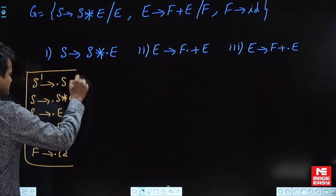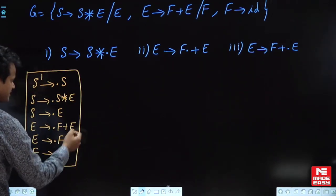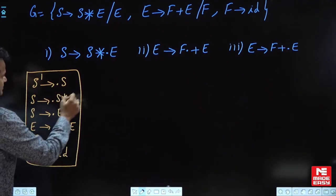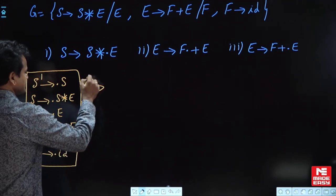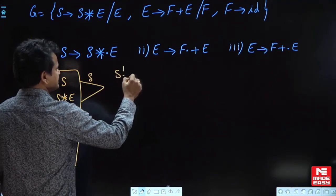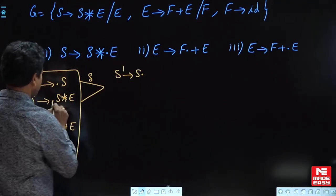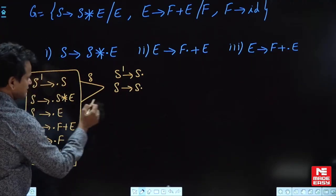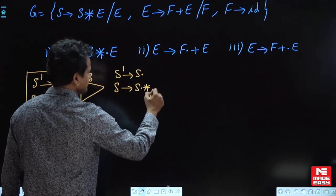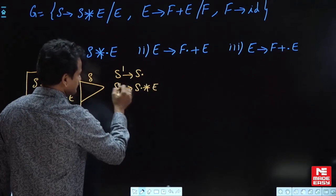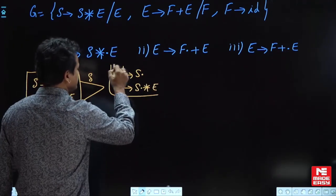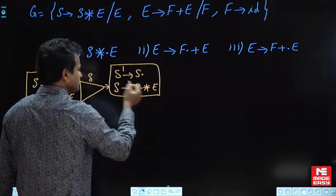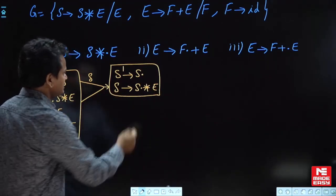Now we must write the go-to operation for every shift symbol. Here, both these productions have the same shift symbol, so these two will move to the same state: S'→S·. And for the go-to on S, we move the dot — S→·*E — and dot of terminal, so we cannot add any other production in this state. This is already completed.